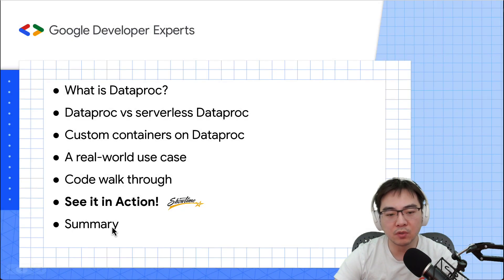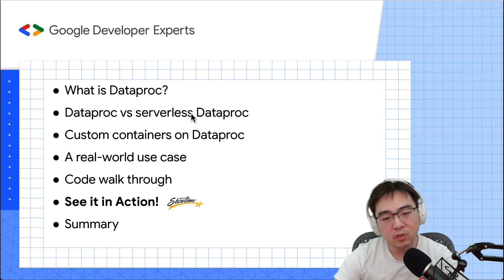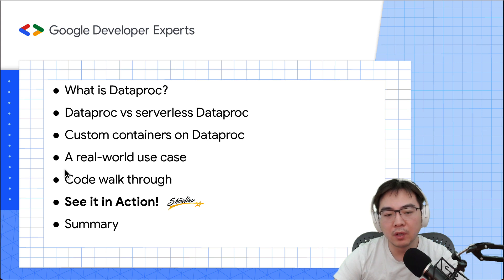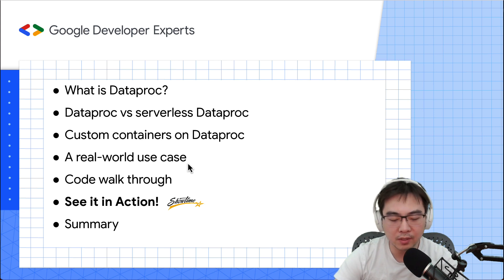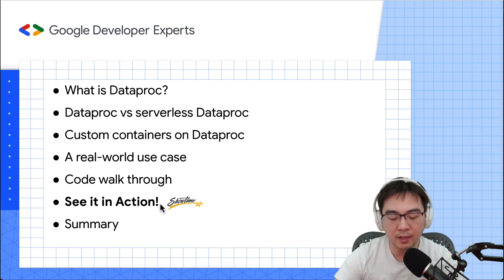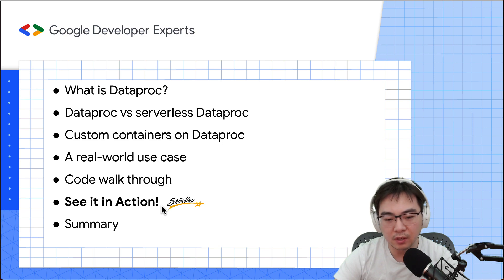Today's agenda contains a number of topics. First, I'll talk about what Dataproc is — a quick intro if you haven't used it before. Then Dataproc versus serverless Dataproc, the custom container on Dataproc, a real-world use case with a diagram showcasing how you can trigger Spark jobs using Google services, a code walkthrough end-to-end, demo time showing how the job gets triggered with serverless Spark including autoscaling, and finally a summary.